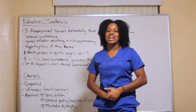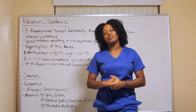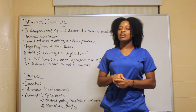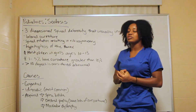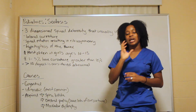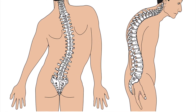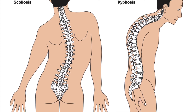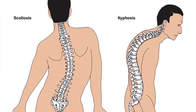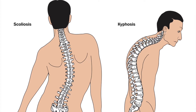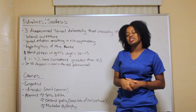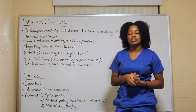Welcome back. Today we're going to talk about pediatrics, specifically scoliosis. Scoliosis is a three-dimensional spinal deformity which involves lateral curvature — you see either a C-shape or an S-shape — spinal rotation resulting in rib asymmetry, and hypokyphosis, which involves the thorax area.